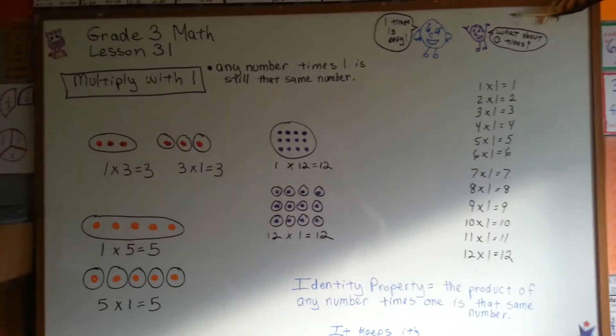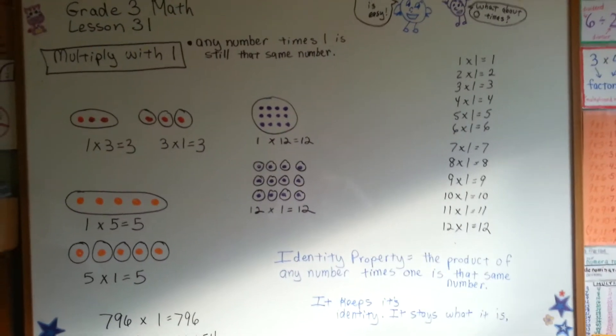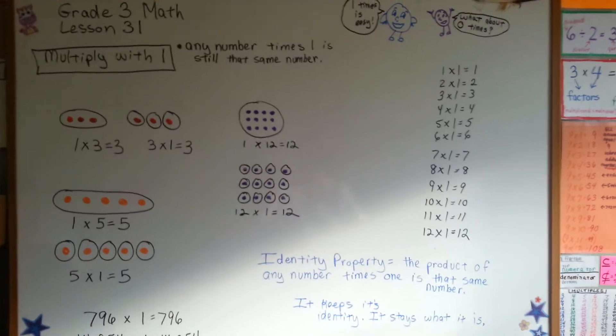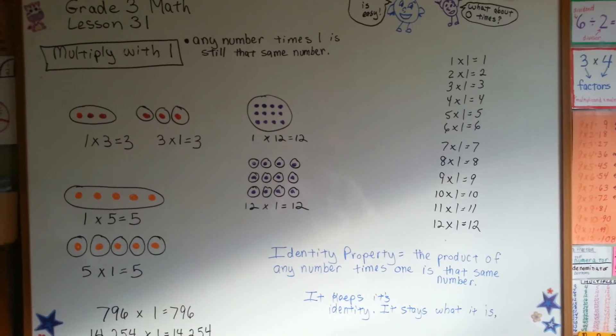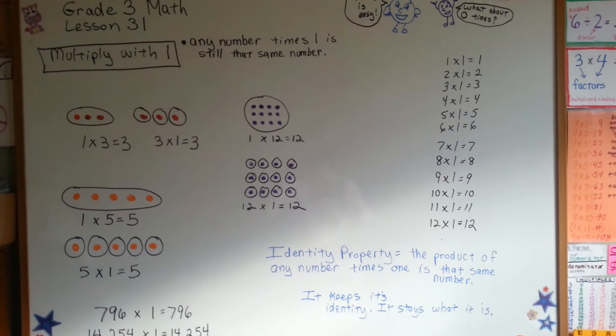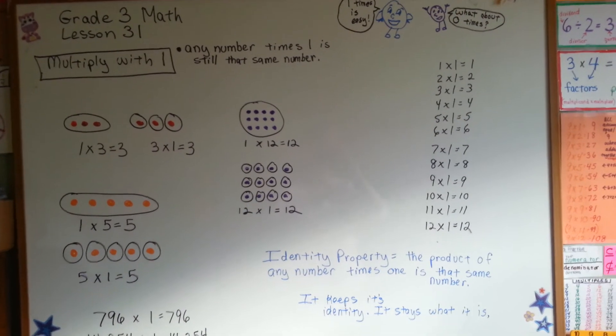Multiplying by one is very easy because you know what the answer is going to be. It's the number that is being multiplied by one. Again, it's keeping who it is. We'll see you next video. Thank you.